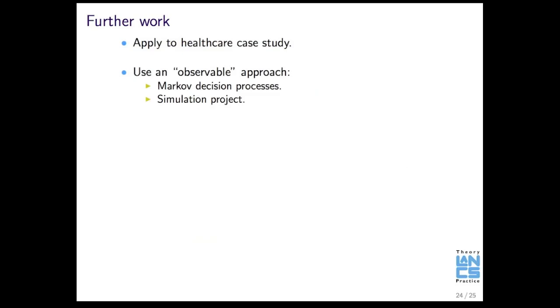As I said, this is ongoing work. I'd like to apply it to a healthcare case study, so use some healthcare data. Now, when looking at these types of problems, so queuing problems with individual behavior, there are two ways of doing it. Using an unobservable approach, which is to use a routing game, or an observable approach. So I'd like to study this using a Markov decision process, which is the observable process.